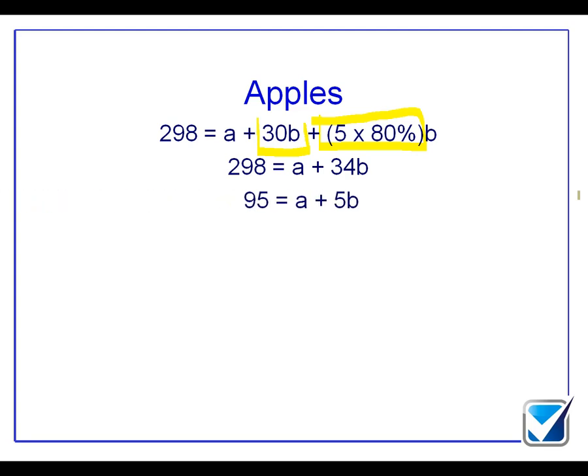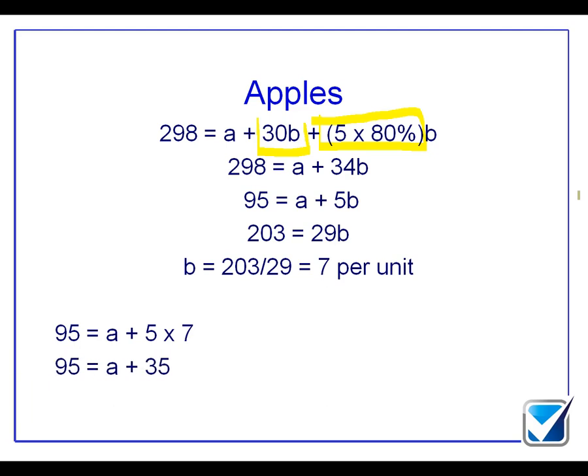Because that's my high equation. I then have my low equation, which is the $95 equals fixed costs plus five lots of apples. I can then solve this equation and work out that my B comes in as $7 per unit or $7 per apple. If I then plug that into my calculations of the 95 equals A plus 5B, that now means I get an overall figure for A of $60.